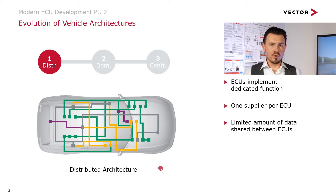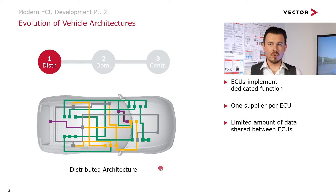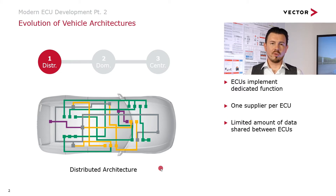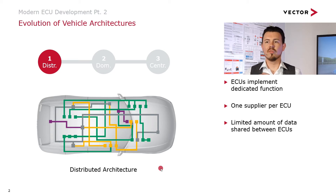If an ECU needed sensors and actuators, they were typically developed in that project, and data from the network had to be routed to this ECU by adapting the communication matrices and gateways. This leads us directly to the drawbacks of this approach: it's extremely difficult to add new functions to the vehicle or modify them later, and there was basically no reuse because you cannot transfer this ECU to another vehicle.